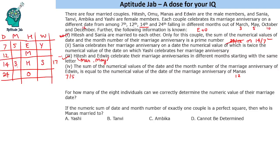No more statements are given to us, so we can fill only these pieces of information. The first question is: for how many of the eight individuals can we correctly determine the numerical value of their marriage date? We can determine it for six of these eight people.